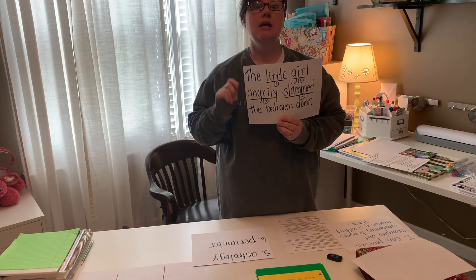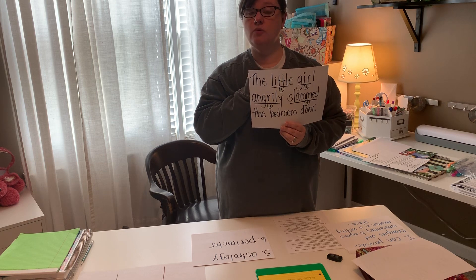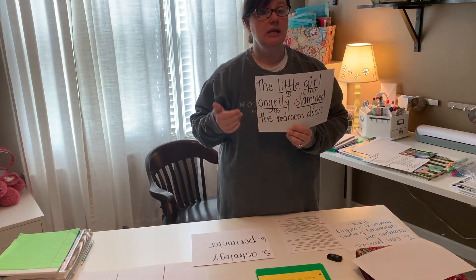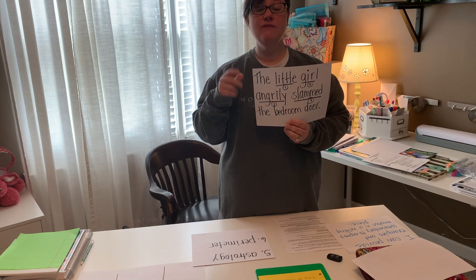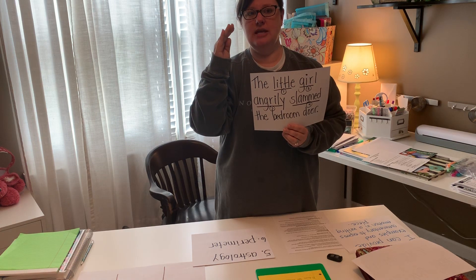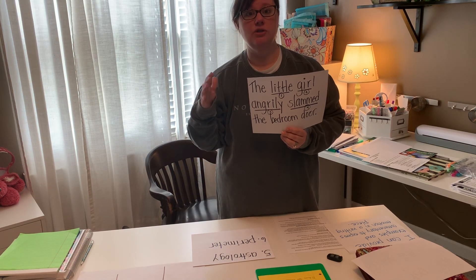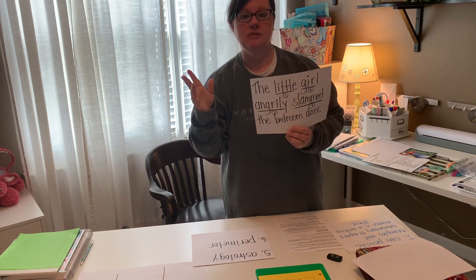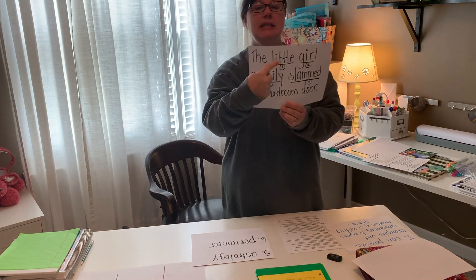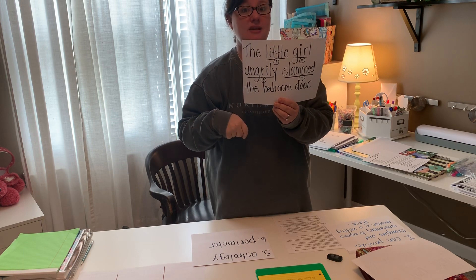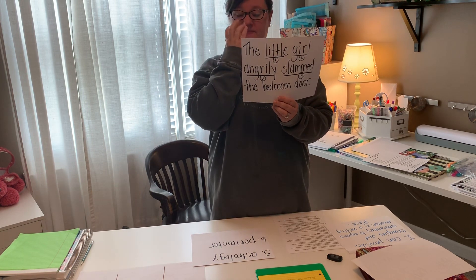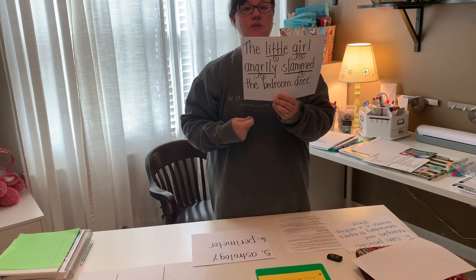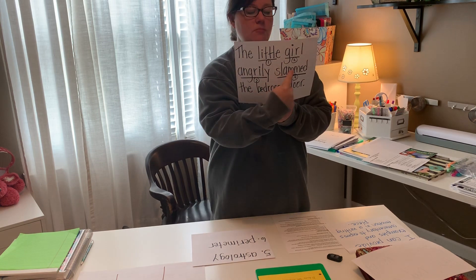Adjectives describe nouns. Adverbs can describe verbs, or — as we learned right before spring break — adverbs can give us more information about an adjective. We have prepositions that often tell us where or when, conjunctions that join things together, and interjections which usually come at the beginning of a sentence and express emotion, like 'hey,' 'quit,' or 'ouch, that hurt.' Don't forget the pronoun — pronouns take the place of nouns. Now write the part of speech of 'little' next to number one, 'girl' next to number two, 'angrily' next to number three — it's got an L-Y — and the part of speech of 'slammed' next to number four.